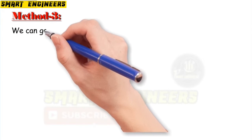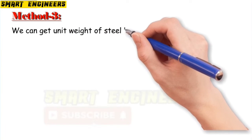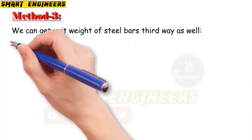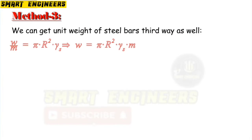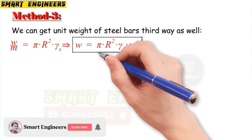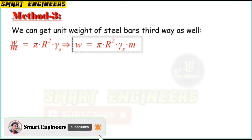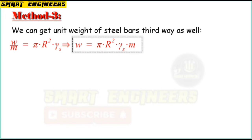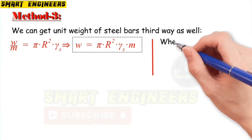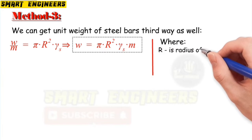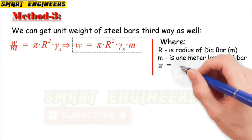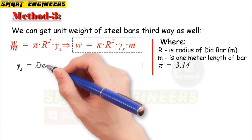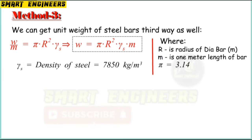Method three. We can get the unit weight of steel bars by a third method as well. The formula is: W/m = π × r² × γs, so W = π × r² × γs × m, where r is the radius of the bar in meters, m is one meter length of bar, and γs is the density of steel bar which equals to 7,850 kilogram per cubic meter.